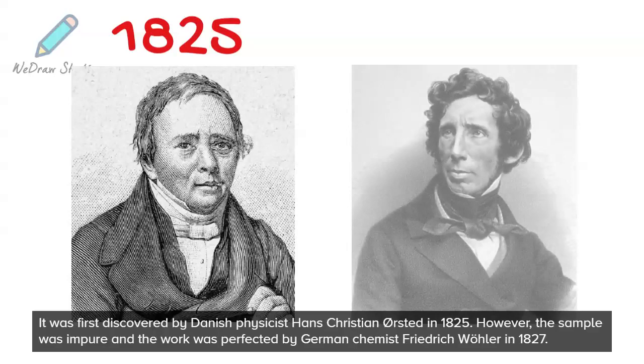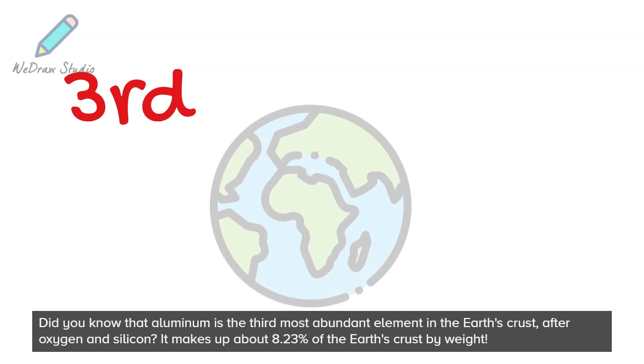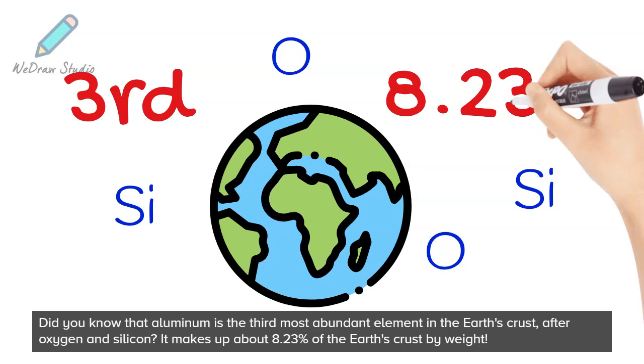Did you know that Aluminum is the third most abundant element in the Earth's crust, after oxygen and silicon? It makes up about 8.23% of the Earth's crust by weight.